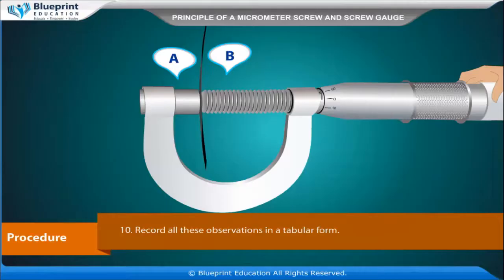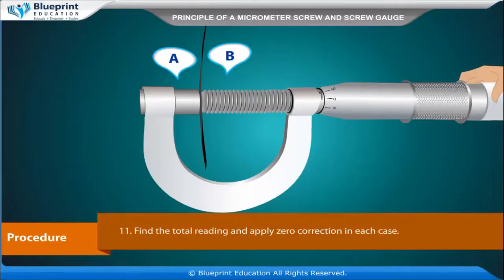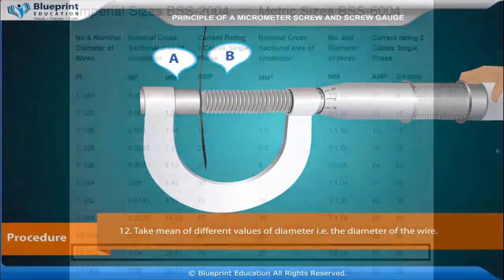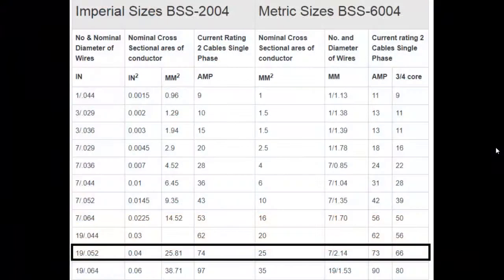Record all these observations in a tabular form. Find the total reading and apply zero correction in each case. Take the mean of different values of diameter, i.e. the diameter of the wire. Coming back to our main video.